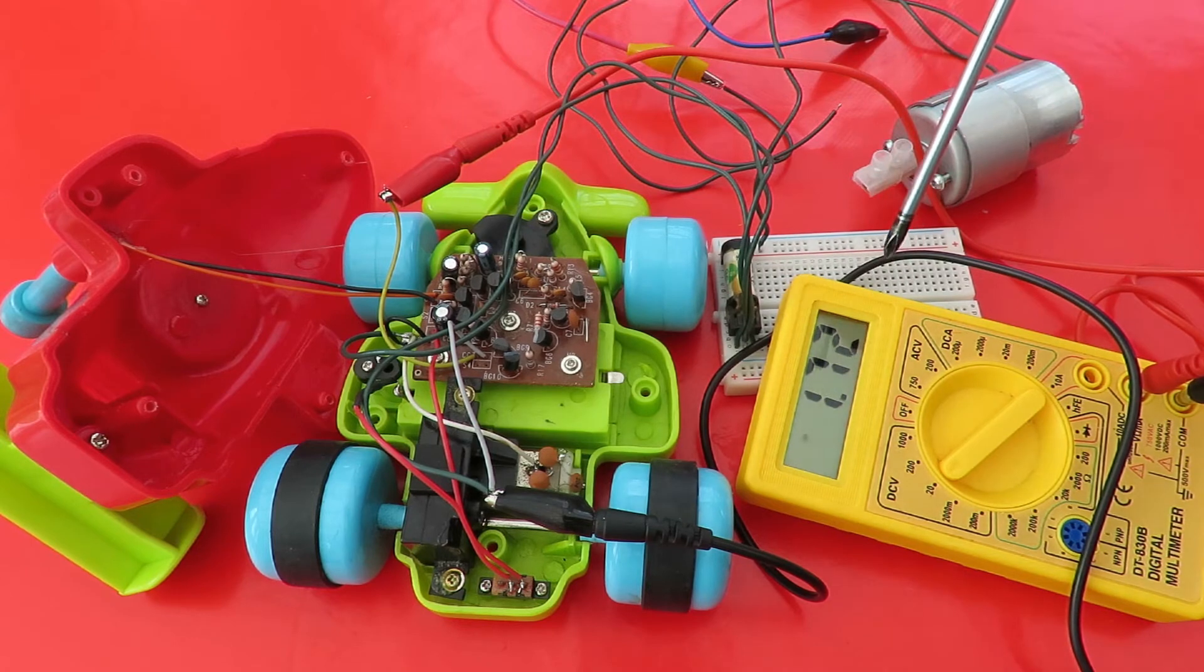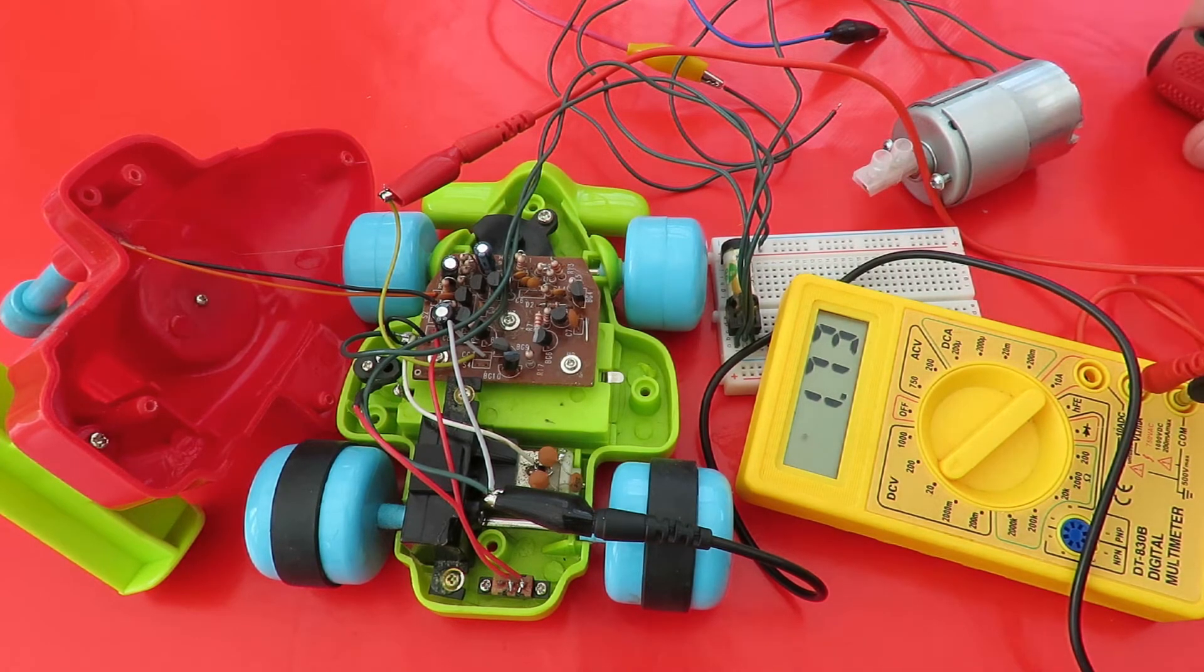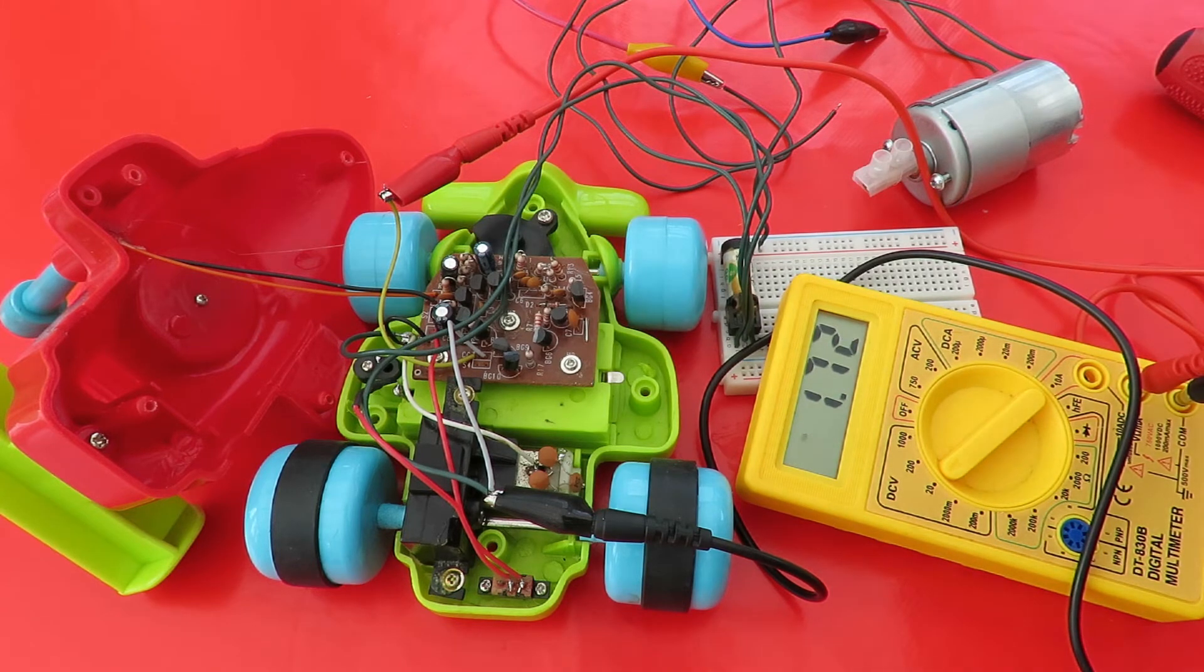Now I've got my meter across there at the moment. We're showing 1.7 volts. If I clap my hands, that'll go to negative, so it'll reverse the motor.